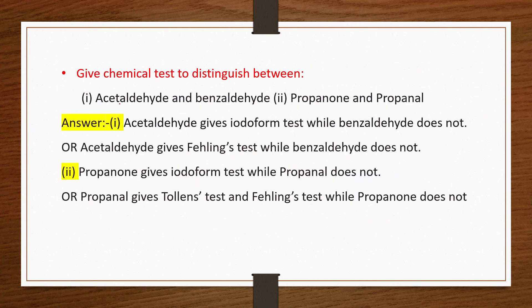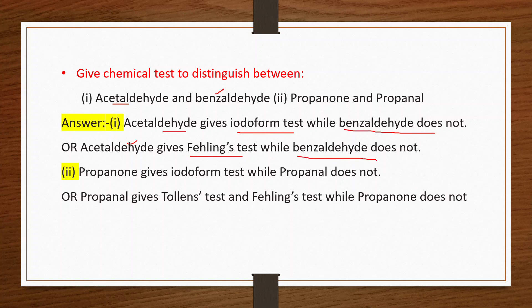To distinguish acetaldehyde from benzaldehyde: acetaldehyde gives the iodoform test while benzaldehyde does not. Alternatively, acetaldehyde gives Fehling's test while benzaldehyde does not. To distinguish propenone from propenol: propenone gives iodoform test while propenol does not. Alternatively, propenol gives Tollens test and Fehling's test while propenone does not.